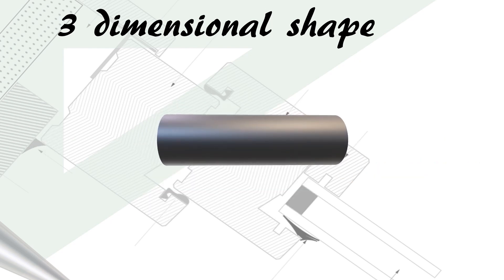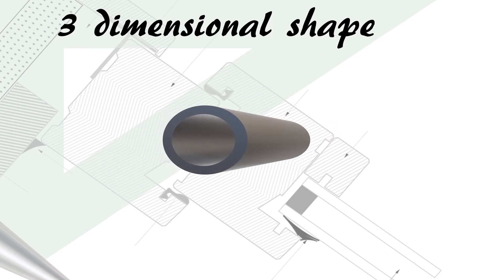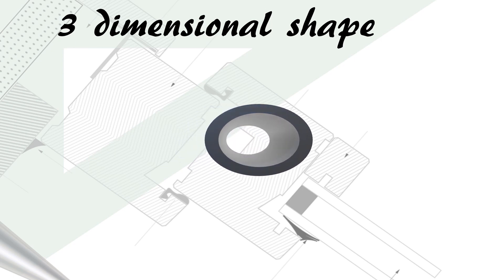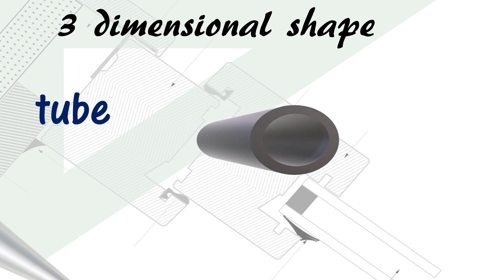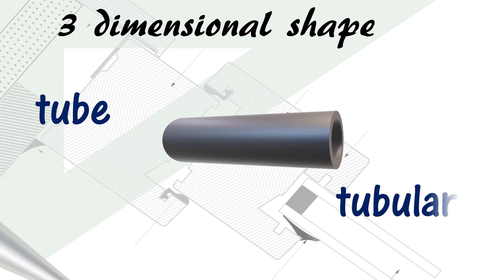Here is another shape that is circular, but this is hollow, so inside the circle is empty. In three dimensions, we call this a tube. If something has this shape and properties, we call it tubular.